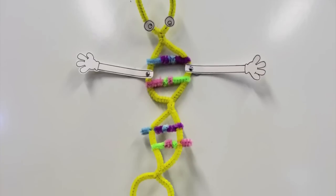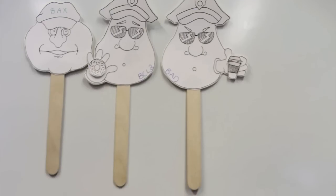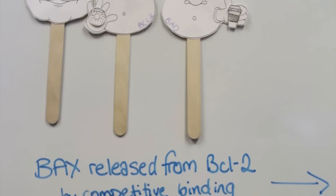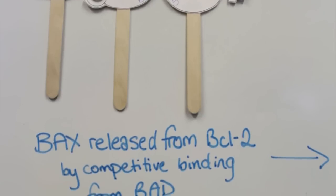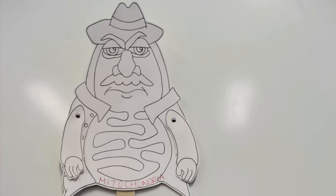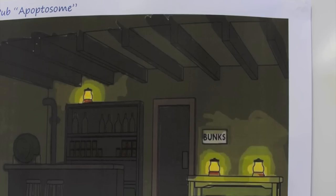In summary, these are the events that occur in intrinsic apoptosis as shown in our video. The DNA is damaged or mutated, resulting in the upregulation of BAD, which competitively binds to BCL2 releasing BAX. BAX then causes pores in the mitochondria resulting in the release of cytochrome C and the formation of the apoptosome.